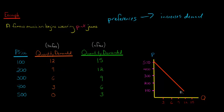At $200, it was 9 jeans demanded, now it's 12. So it's increased afterwards, after this musician has done that, it's changed people's preferences. So now they're demanding more pink jeans at every single price.